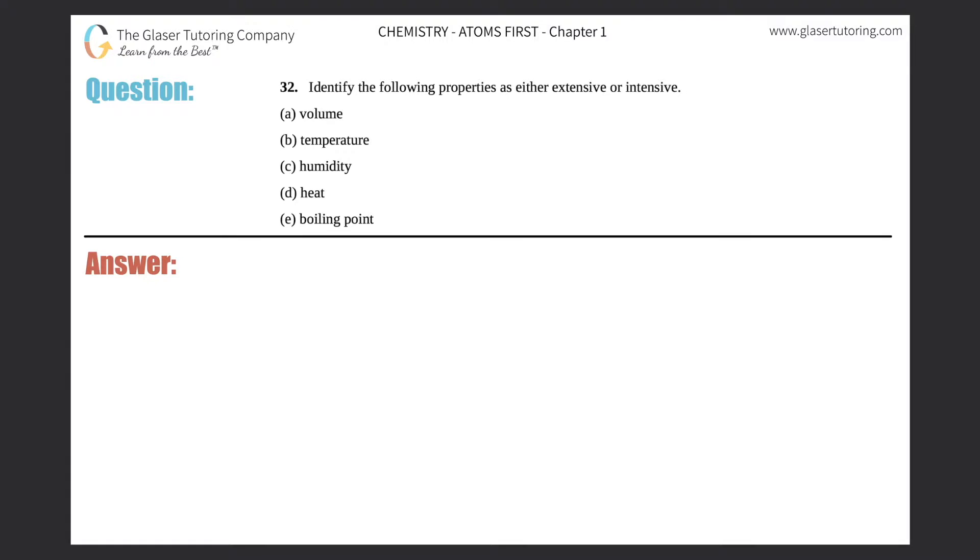Number 32: identify the following properties as either extensive or intensive. I see a through e, so I'm just going to quickly say a, b, c, d, and we'll put e at the bottom.